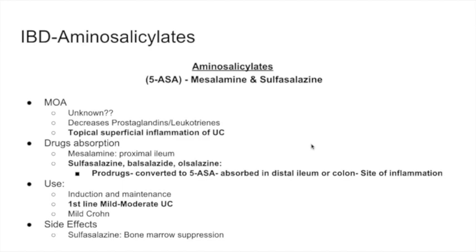The first class of drugs is the aminosalicylates. Examples are mesalamine and sulfasalazine. How they exactly work we are not sure, but it is thought that they decrease prostaglandins and leukotrienes, similar to aspirin — they're kind of a modification of aspirin. They are used for topical superficial inflammation, specifically for ulcerative colitis.